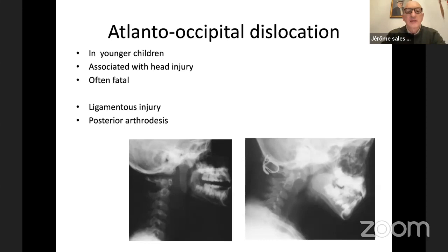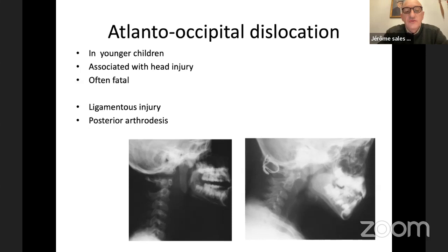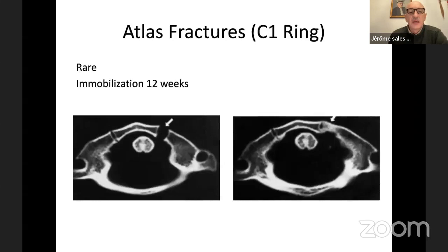Now some pathologic cases. First, atlanto-occipital dislocation — fortunately it is rare. It arrives in young children, is associated very often with a head injury, and is often fatal. In that case you have ligamentous injuries. You need to treat with posterior arthrodesis, using a Y-shaped bone graft with a collar or halo jacket.